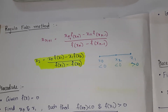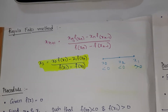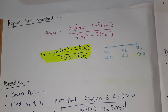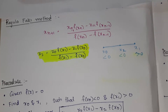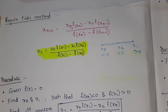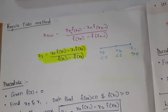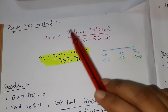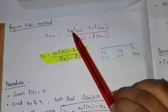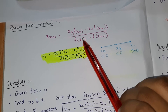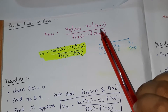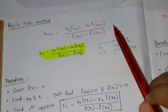Hello guys, welcome back to my channel. In this video we are going to see a new root finding technique — the Regula Falsi method. First, let's see the formula: x(n+1) = [x(n-1)·f(xn) − xn·f(x(n-1))] divided by [f(xn) − f(x(n-1))].